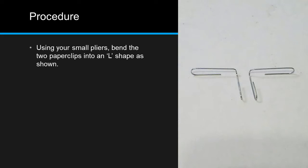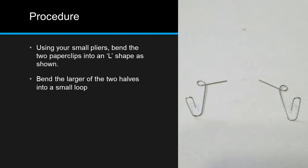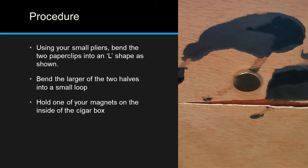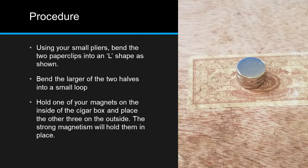Using your small pliers, bend the two paper clips into an L-shape as shown. Bend the larger of the two halves of each paper clip into a small loop. Hold one of your magnets on the inside of the cigar box, place the other three on the outside. The strong magnetism will hold them in place.